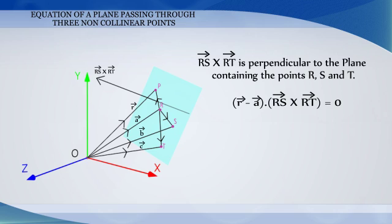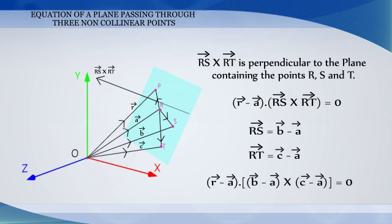But vector RS is equal to B vector minus A vector, and RT is equal to C vector minus A vector. Therefore, the vector equation of the plane passing through three non-collinear points A, B, C is: (R vector minus A vector) dot (B vector minus A vector) cross (C vector minus A vector) is equal to zero.